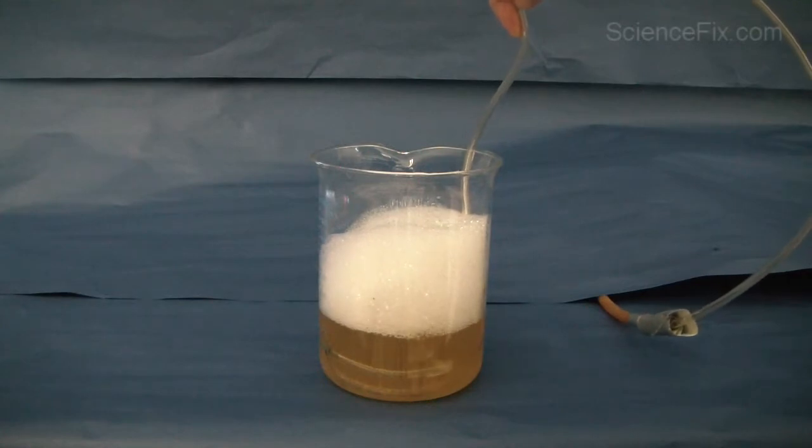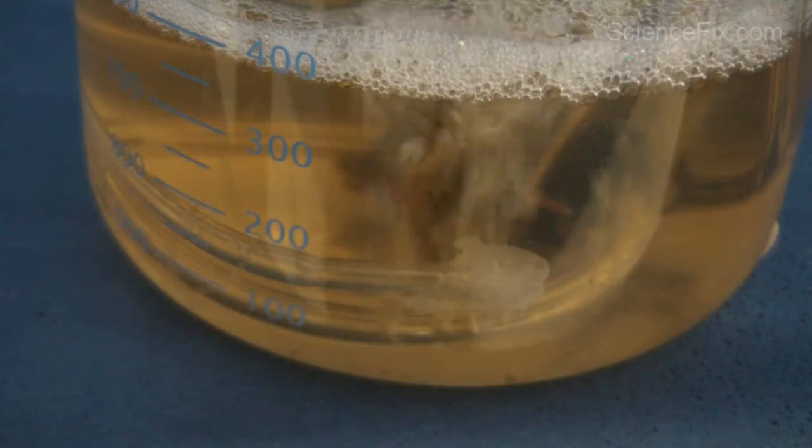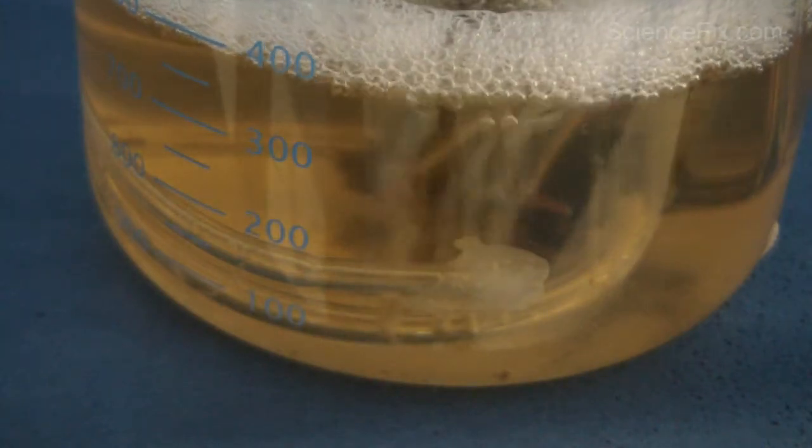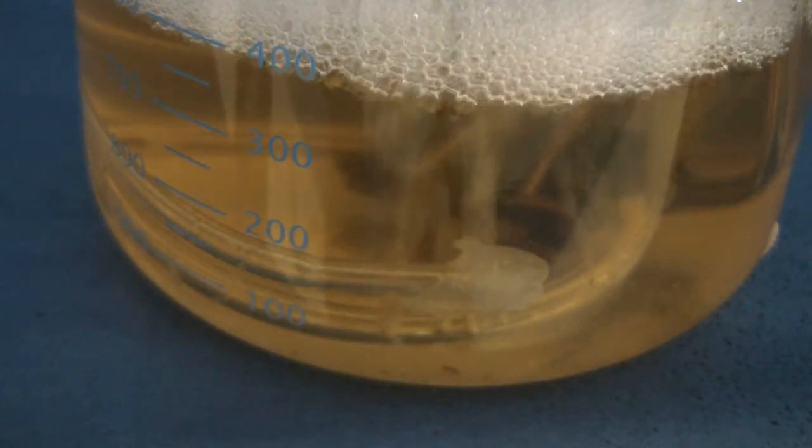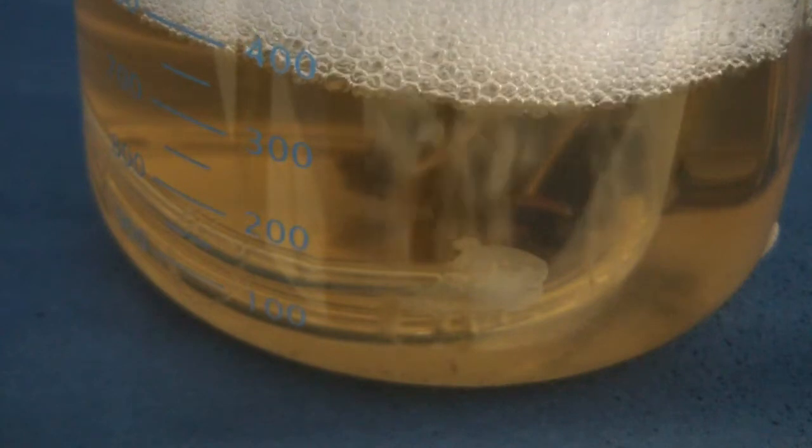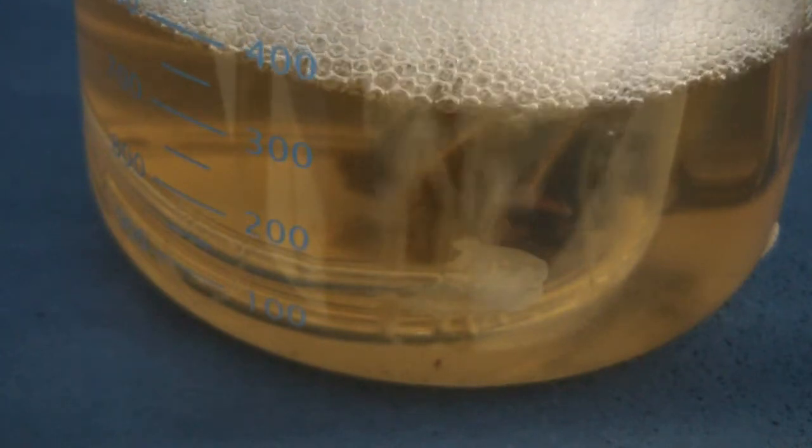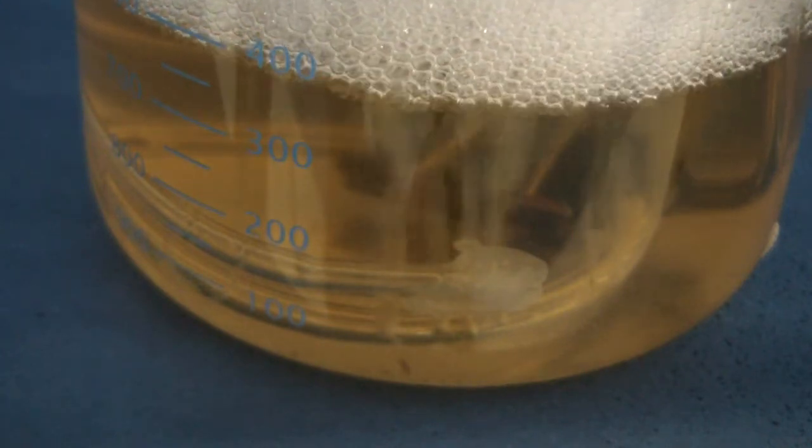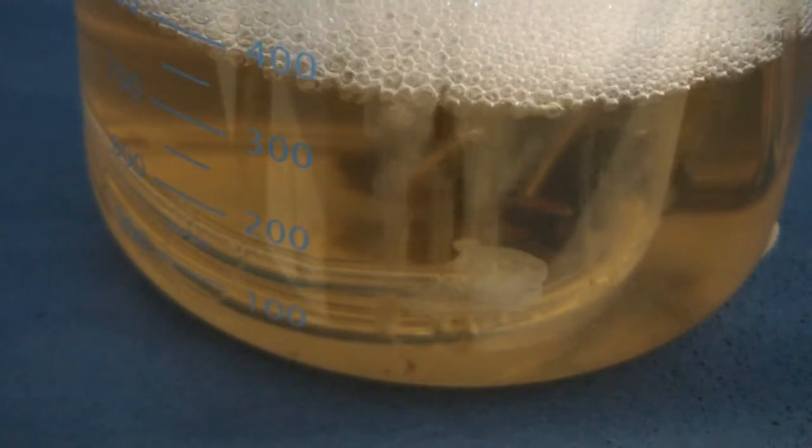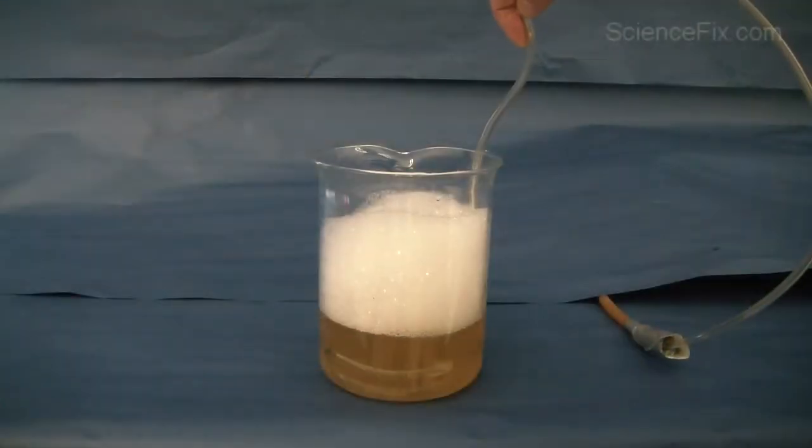In the beaker is a mixture of soap, water, and some glycerin. At the bottom of the beaker is a tube you can get from aquarium supply stores. The tube has tiny little holes poked into it with a push pin, and I have the tube hooked up to a natural gas outlet.